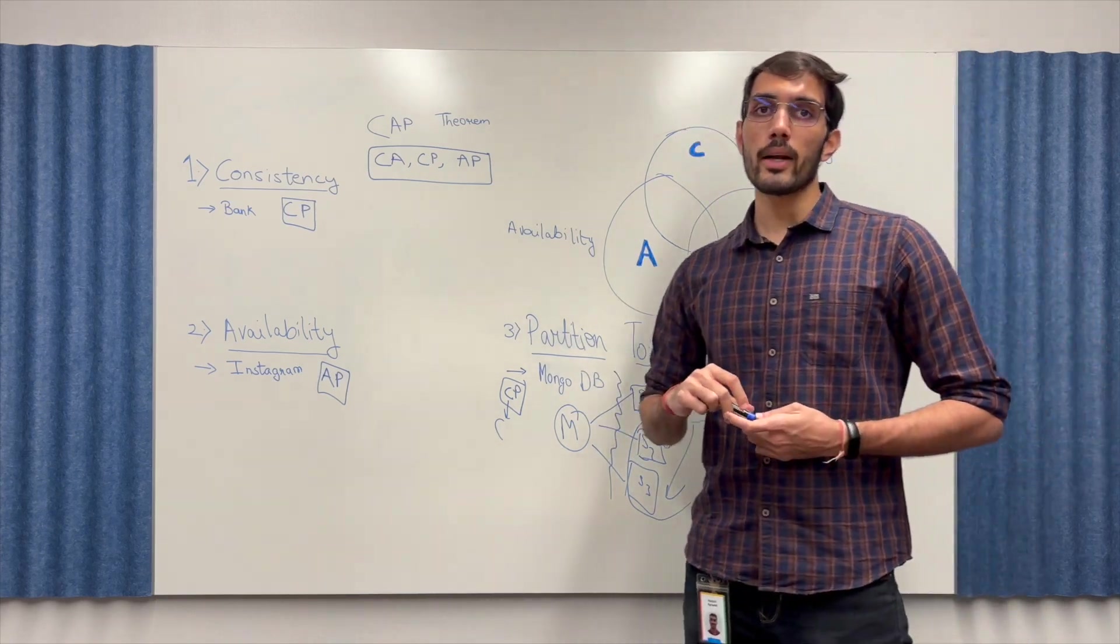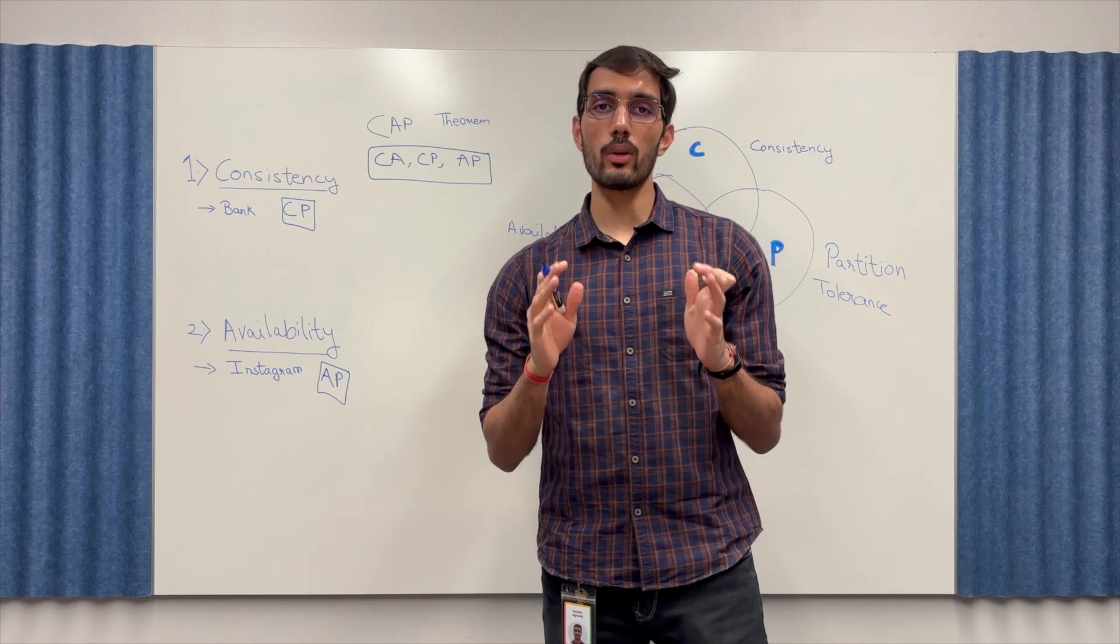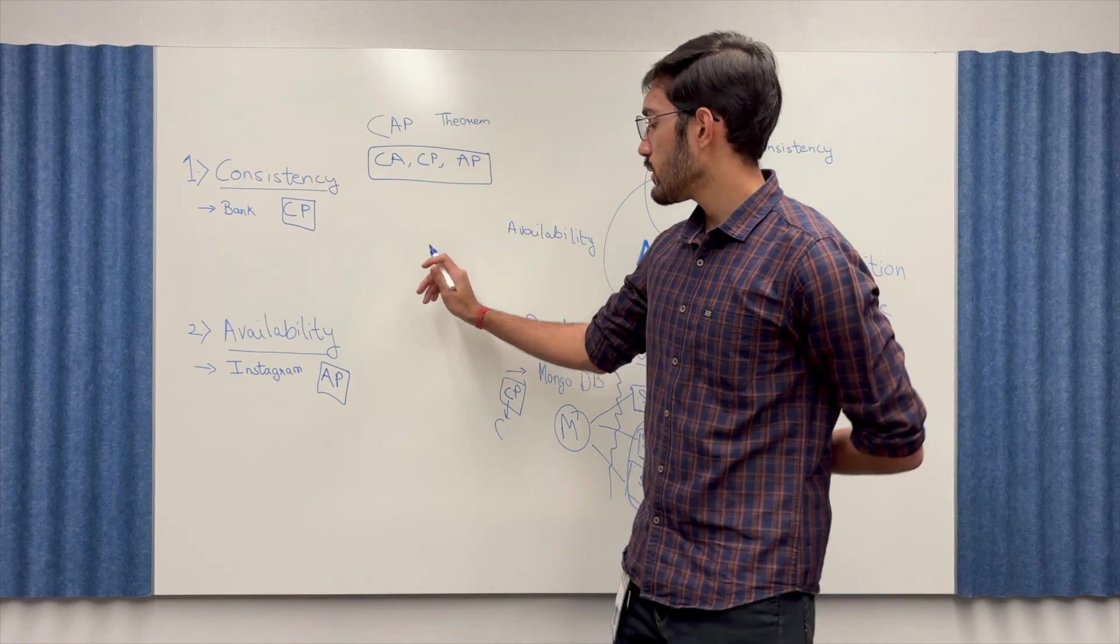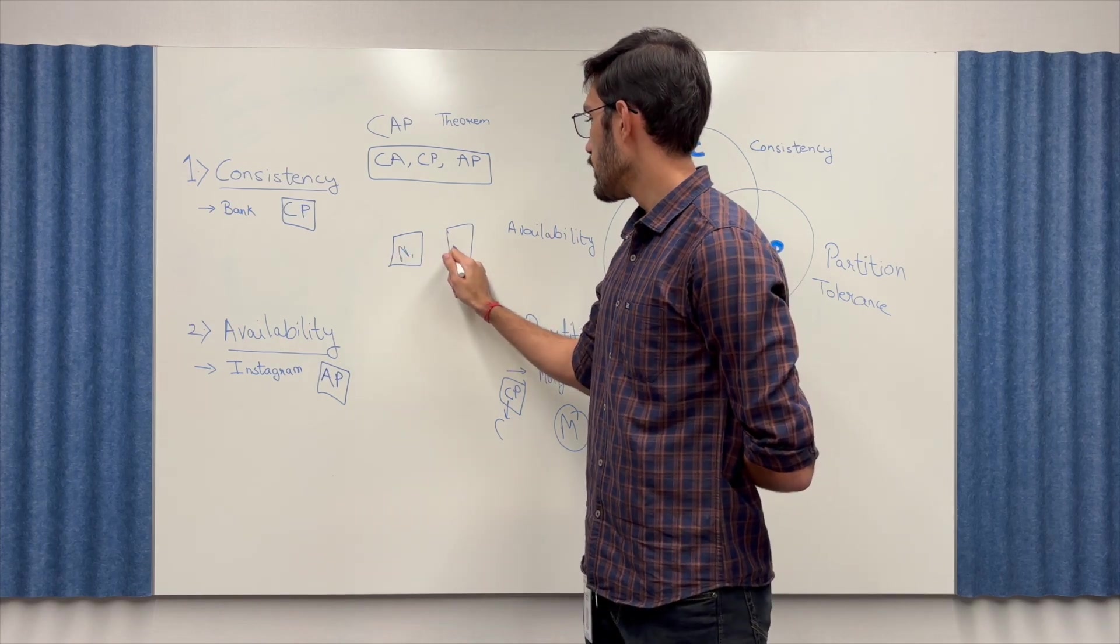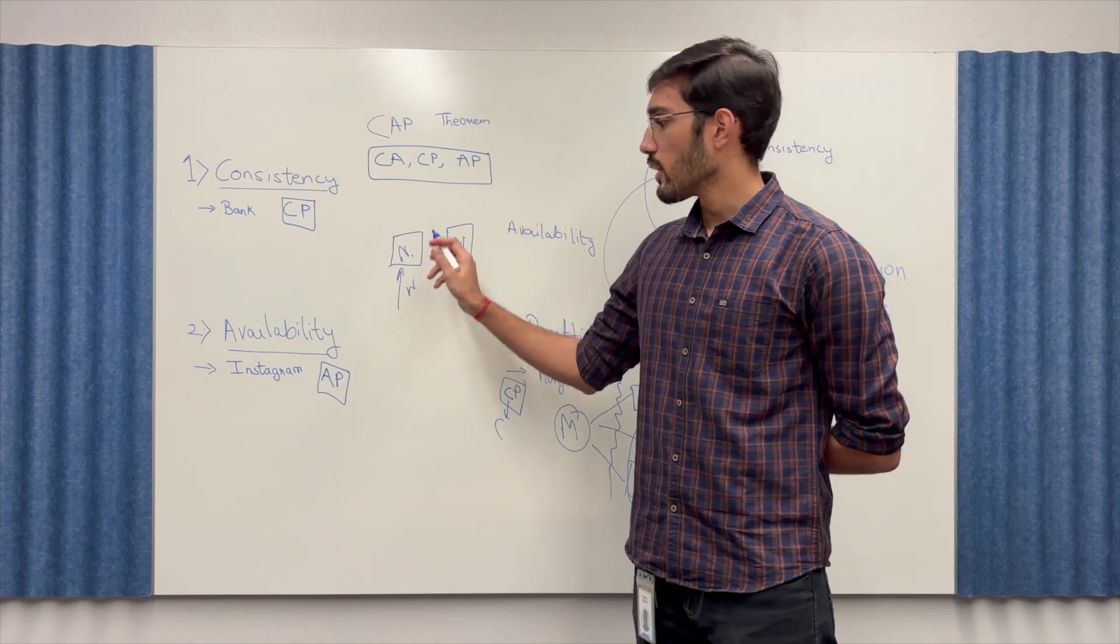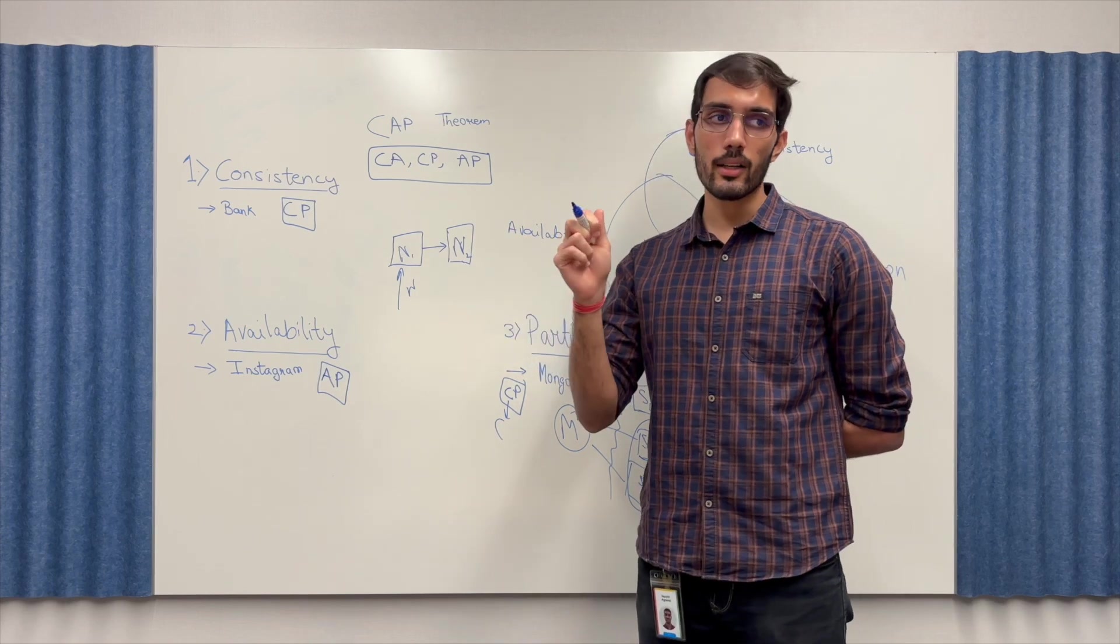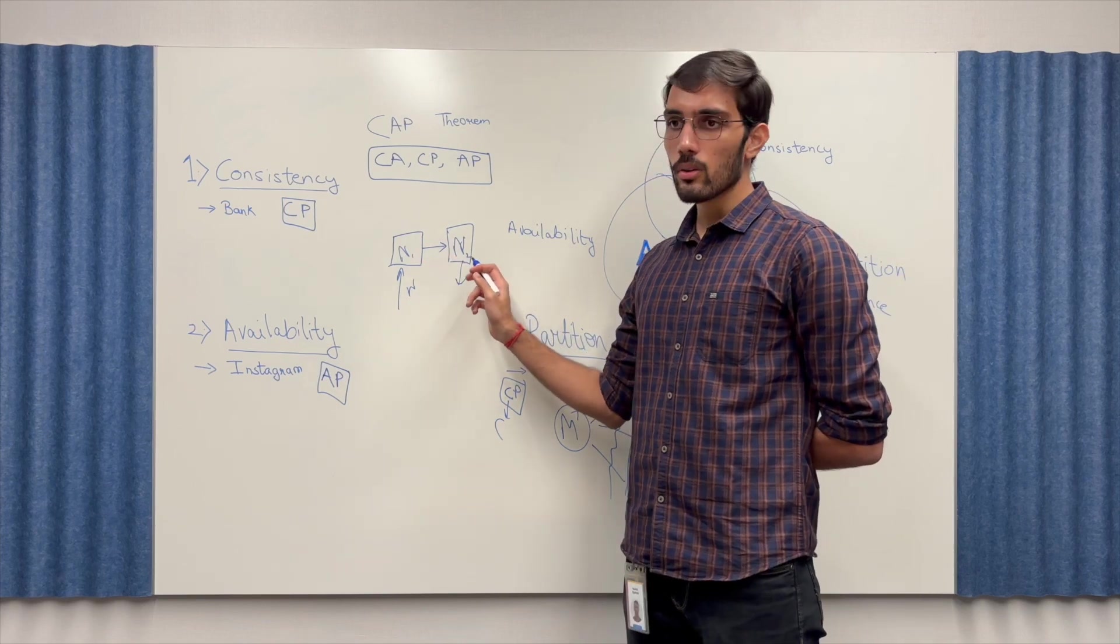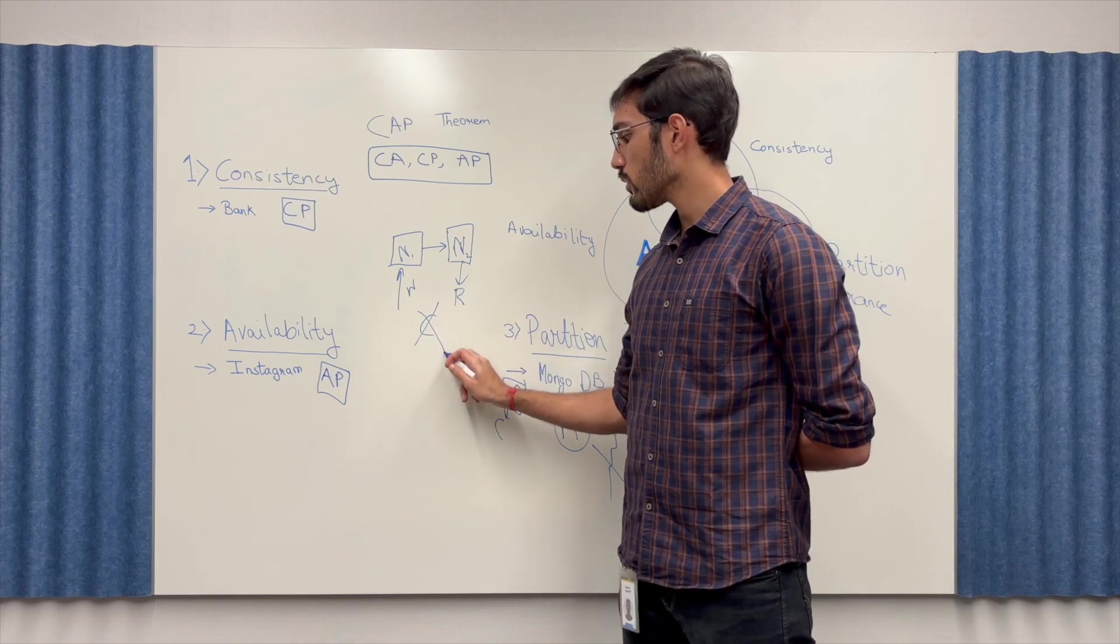Now you must be wondering that why did I not mention a CA system? Now think of it like what would happen in a CA system you also want it to be 100% available and you also want it to be consistent. Just a small example even if you have a server with two nodes N1 and N2 a write happens on N1 and it has to be copied to N2 now this will take some time but what if because you want to build a highly available system N2 should still be allowing reads now because N1 and N2 are not yet in sync and you still allowed a read here. The consistency is not taken into consideration.